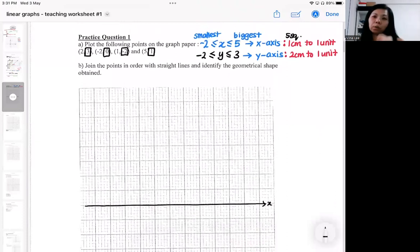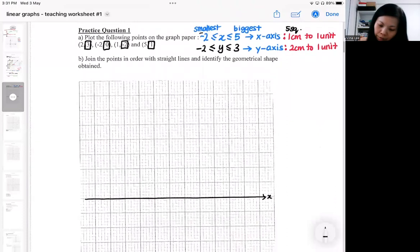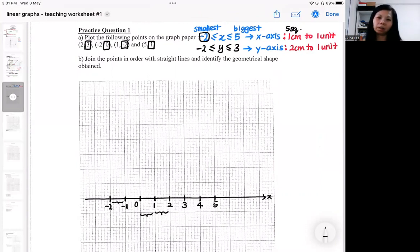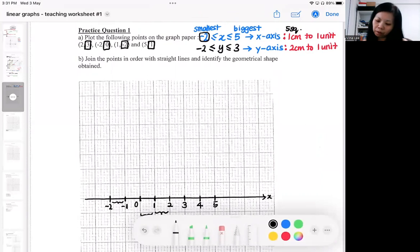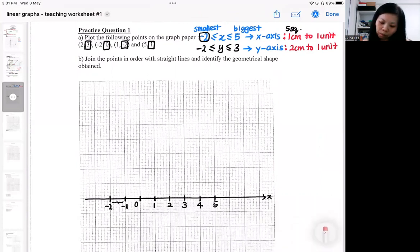So every five square will be one unit. I need to start from the smallest. This is minus two. So every five square is going to be one unit. When they say one centimeter, one unit means every five square will give you one unit. And in our case, we will need it for minus two to five.